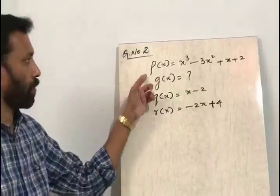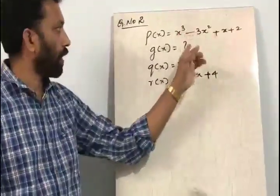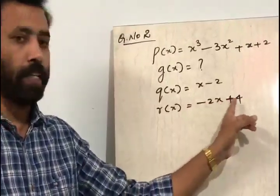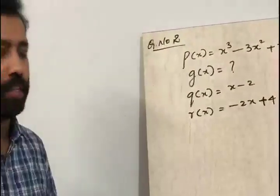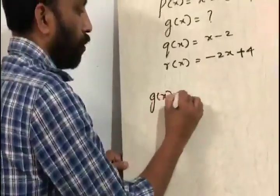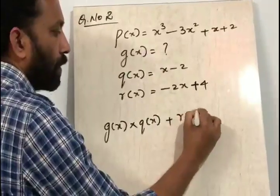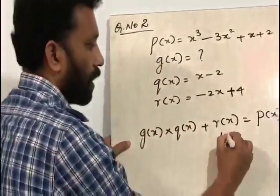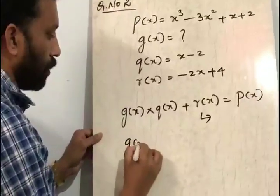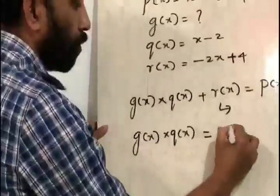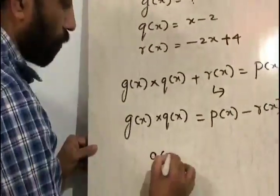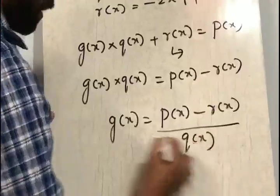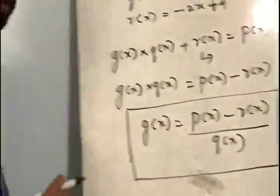Question number 2: p of x is equal to x cubed minus 3x squared plus x plus 2, divided by another polynomial g of x. The quotient and the remainder are x minus 2 and minus 2x plus 4 respectively. Find g of x. This is a very important question for 10th grade students. We know that g of x into q of x plus r of x is equal to p of x — this is the division algorithm. To find g of x, we transpose r of x: g of x into q of x equals p of x minus r of x, so g of x equals p of x minus r of x divided by q of x.